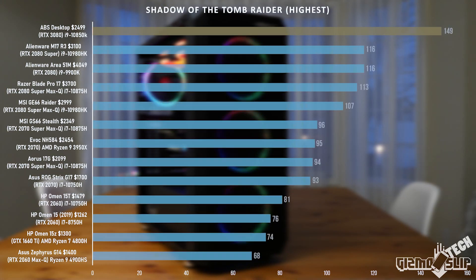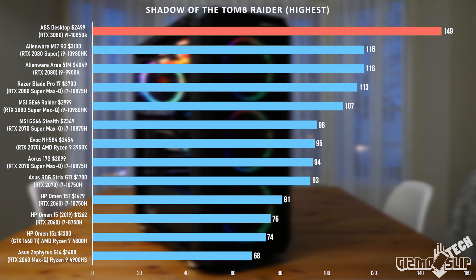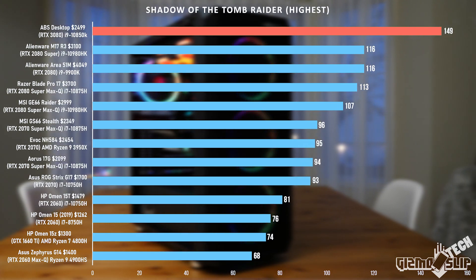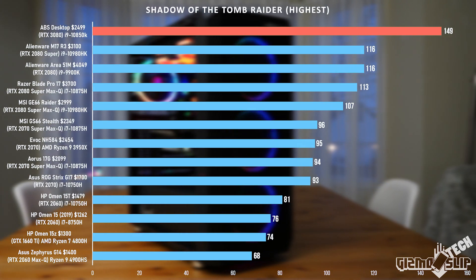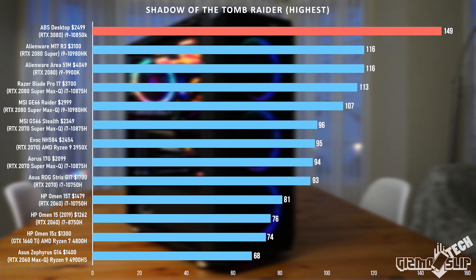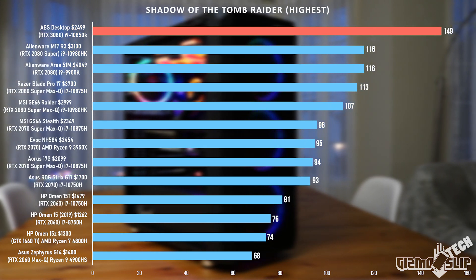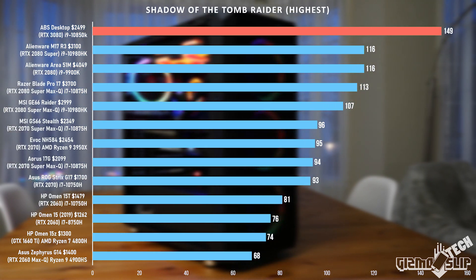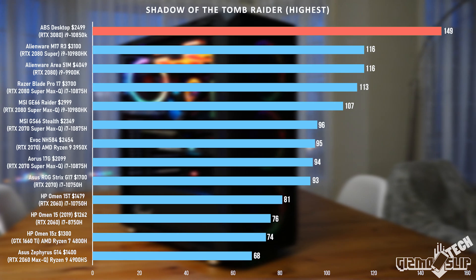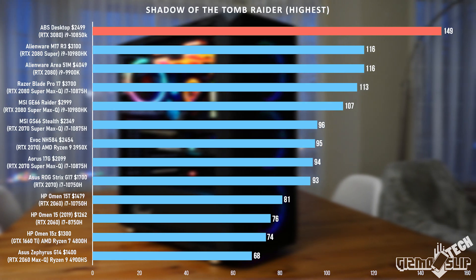When we look at Shadow of the Tomb Raider, there's a bigger gap in performance — 149 fps versus 116. That tells us Shadow of the Tomb Raider is less CPU-bound and more GPU-bound, so we're getting a bigger performance gain. Keep in mind this is again at 1080p resolution — if this benchmark were done at 4K, we'd be looking at an even bigger gap.